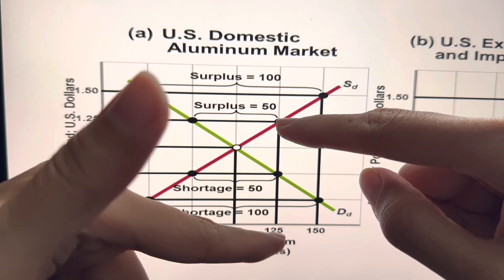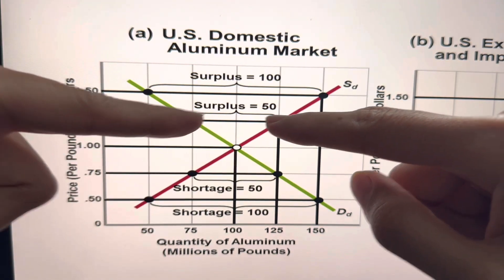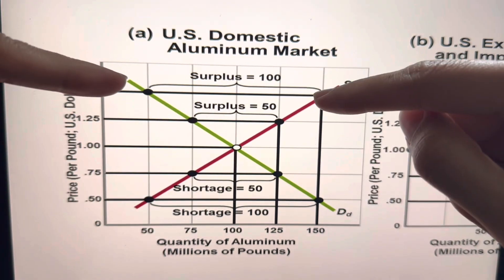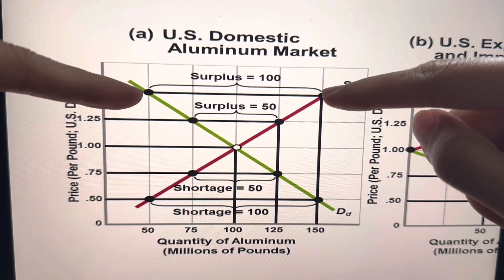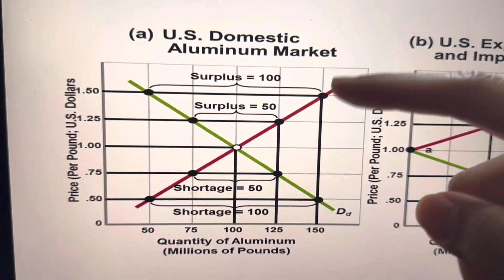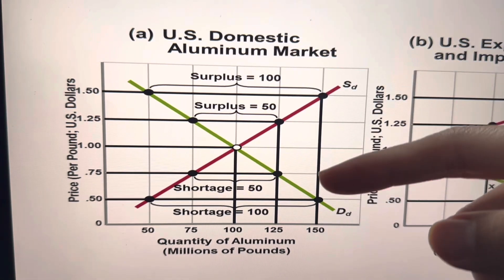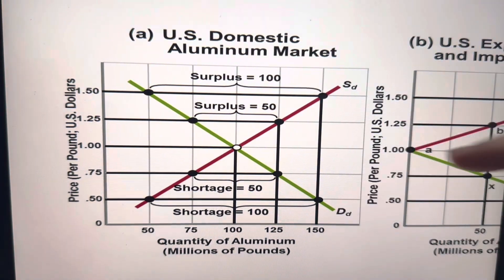Excess supply, which is $1.25 minus $0.75. So we have a surplus of 50. And here, when the price is much higher at $1.50, we have a surplus of 100. Surplus indicates that U.S. has extra aluminum, so they can export it to other countries.